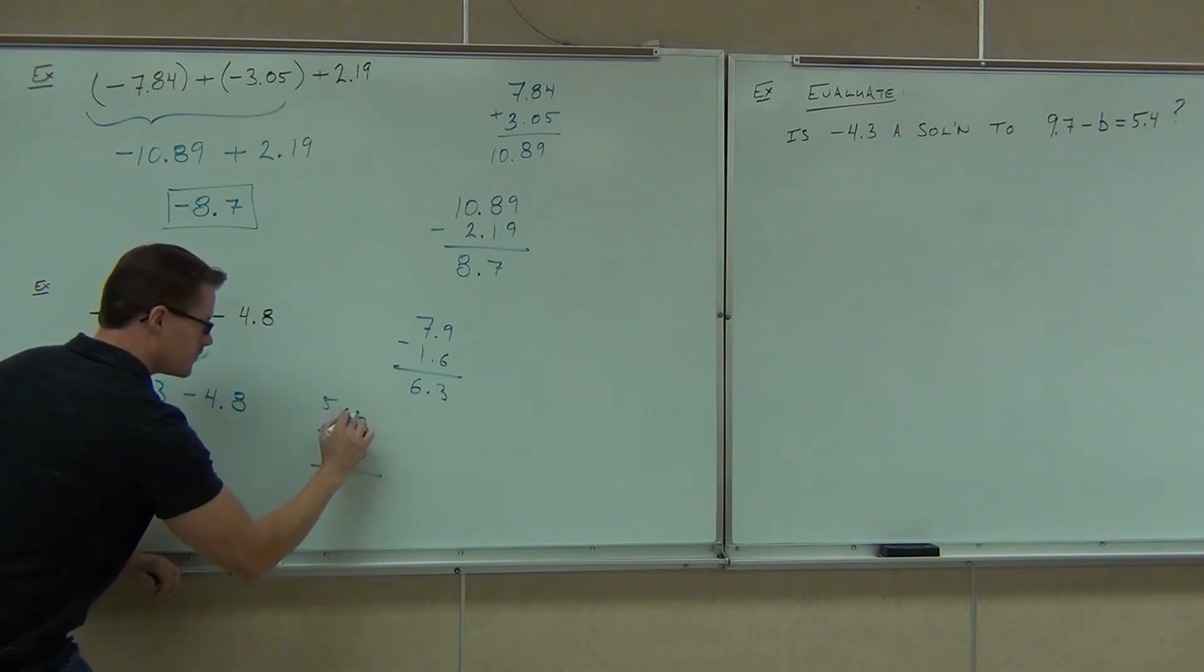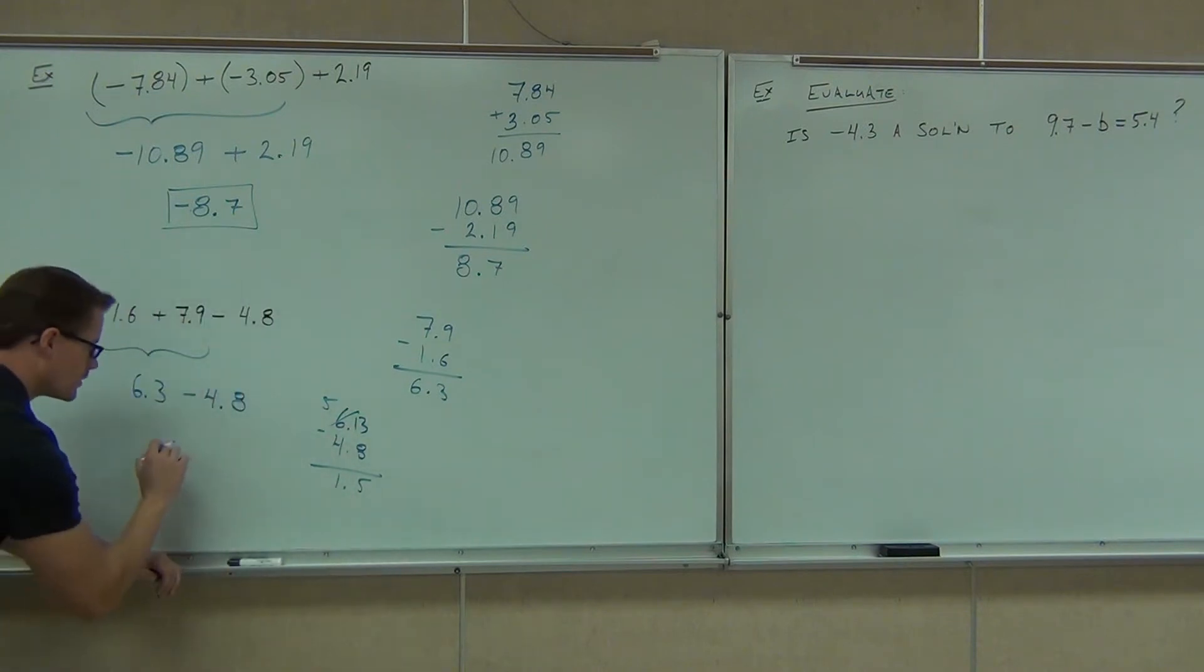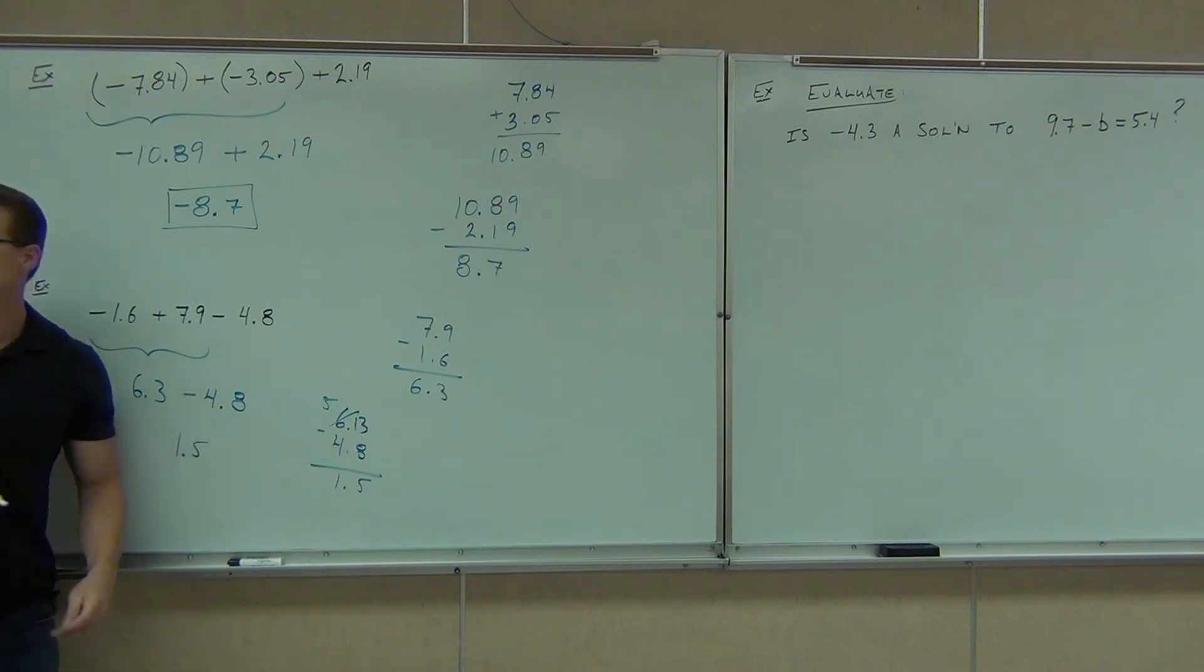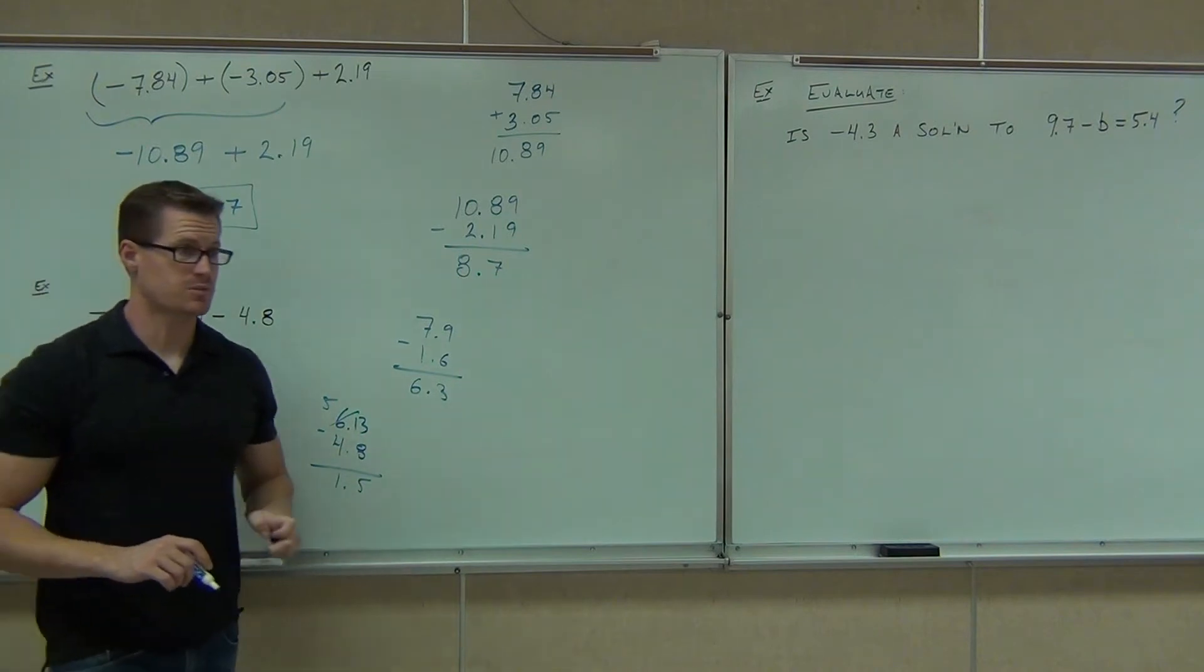So you can do 6.3 minus 4.8. Of course, we'll have to borrow. And you get 1.5. Positive or negative, folks? Positive. The addition rule would say that even if you change it to plus and negative, the bigger number is positive. That remains positive for our answer.